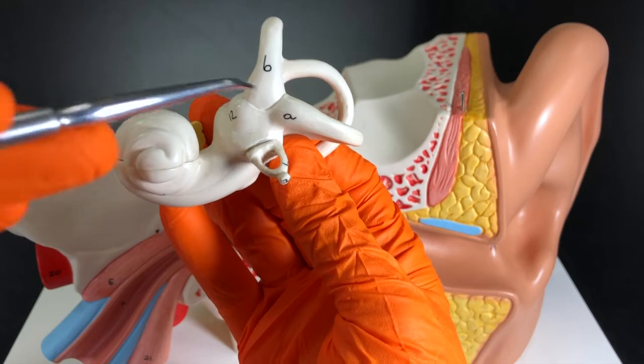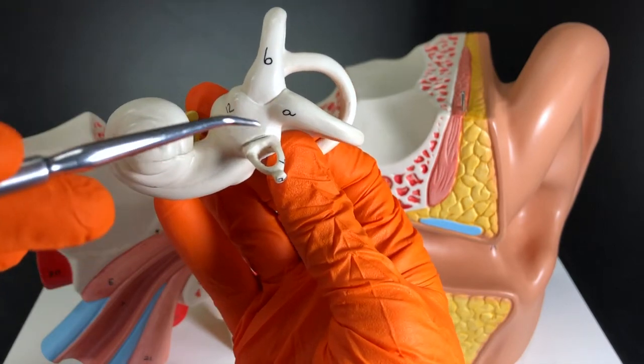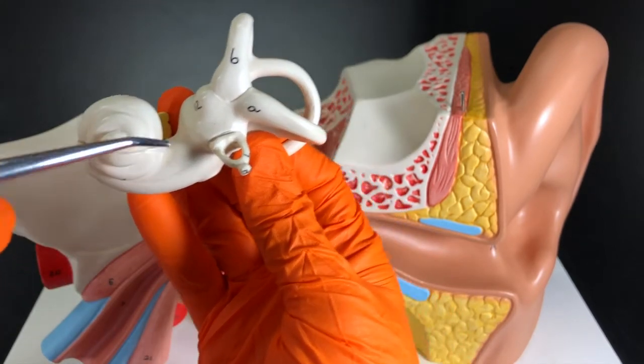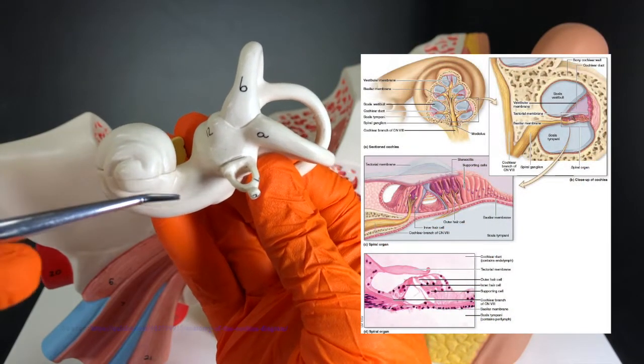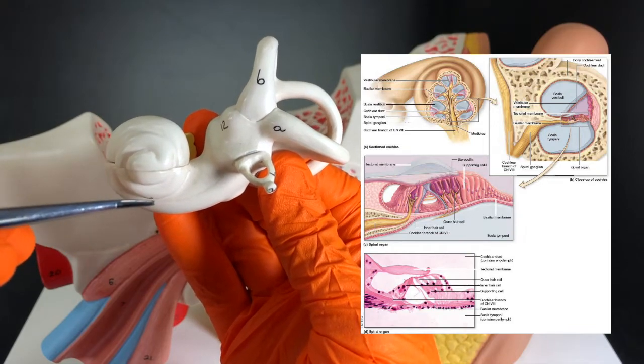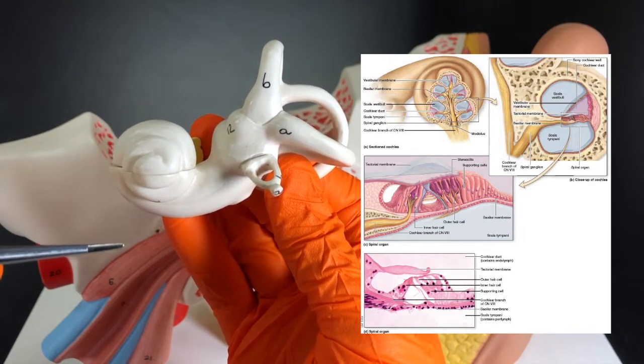And that sound wave is going to come in through an area called the scala vestibuli, which is filled with perilymph. From the scala vestibuli or the vestibular duct, that will vibrate the vestibular membrane.